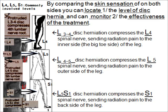Most lumbar disc hernia occur at three levels: L4, L5, and S1. If you know which level is affected, it is easier to specifically treat the muscle at that level. By comparing the skin sensation on both sides of your leg, you can locate the level of the disc hernia and monitor treatment effectiveness — when treatment is working, skin sensation will increase. Less sensation on the inside of the leg is L4; less on the outside is L5; less on the back of the leg is S1. L4 is around the navel area, L5 is lower, and S1 is even lower.